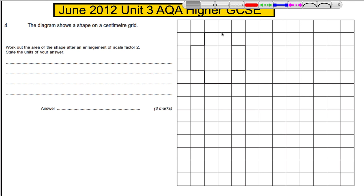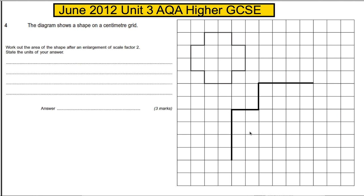If this is two across, then the enlarged shape will be four across. This is one down, it will be two down. This is one across, it will be two across. Two down will be four down. One across will be two across, two down. And you get the message — it's looking something like this. That's the shape being enlarged by scale factor 2.